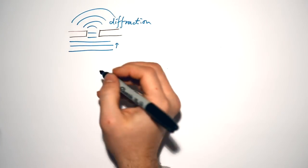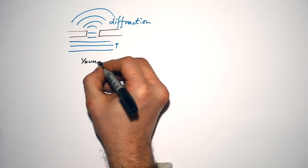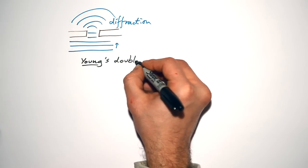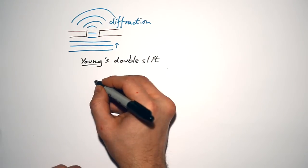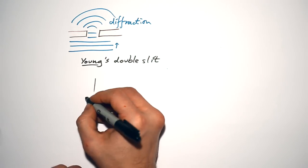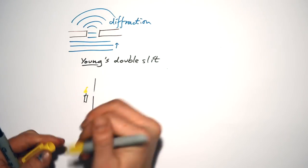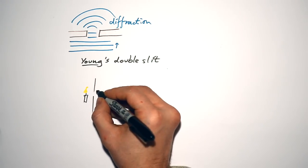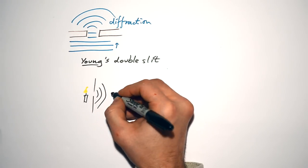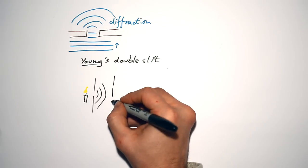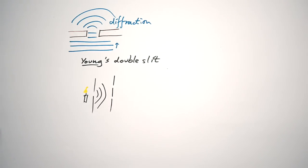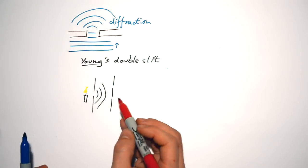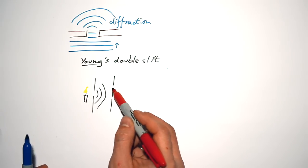The first person to demonstrate this was a chap called Young — a great physicist and scientist. He came up with a double slit setup. What he did was get a candle which sent light towards a single slit. When the light went through the slit it diffracted, and then he had another two slits — Young's double slits.